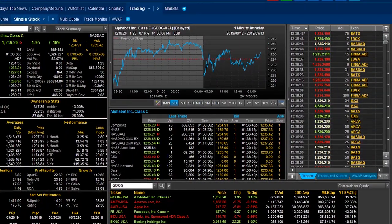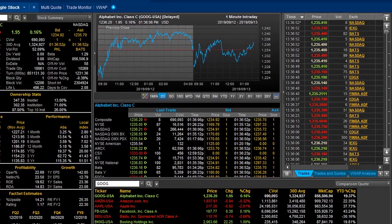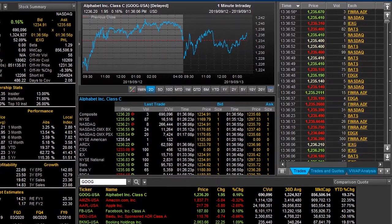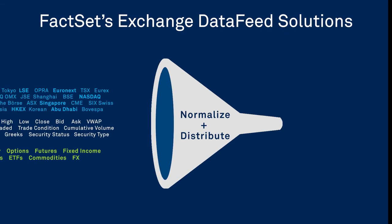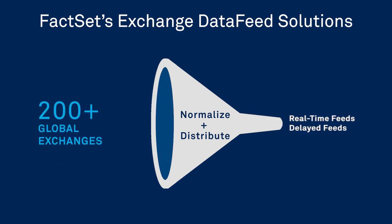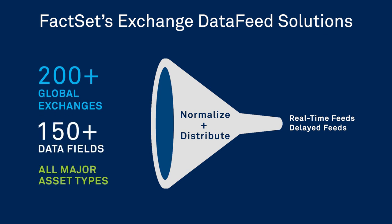This same data is incorporated into FactSet applications and is trusted by a diverse client base of over 115,000 users. FactSet's Exchange data feed solutions consolidate and normalize data from over 200 global exchanges into a single, real-time, or delayed feed offering access to over 150 data fields that span across all major asset types.